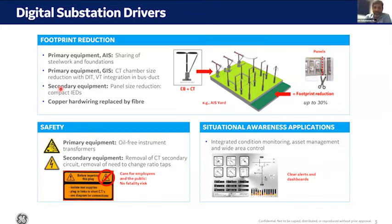The third aspect is situational awareness. All conventional metering and monitoring has been replaced by digital measurements. Since information is available in digital format, we can make use of it for multiple monitoring tasks, asset management, wide area control, and complex measurements. There are a lot of benefits once data is available in digital format.